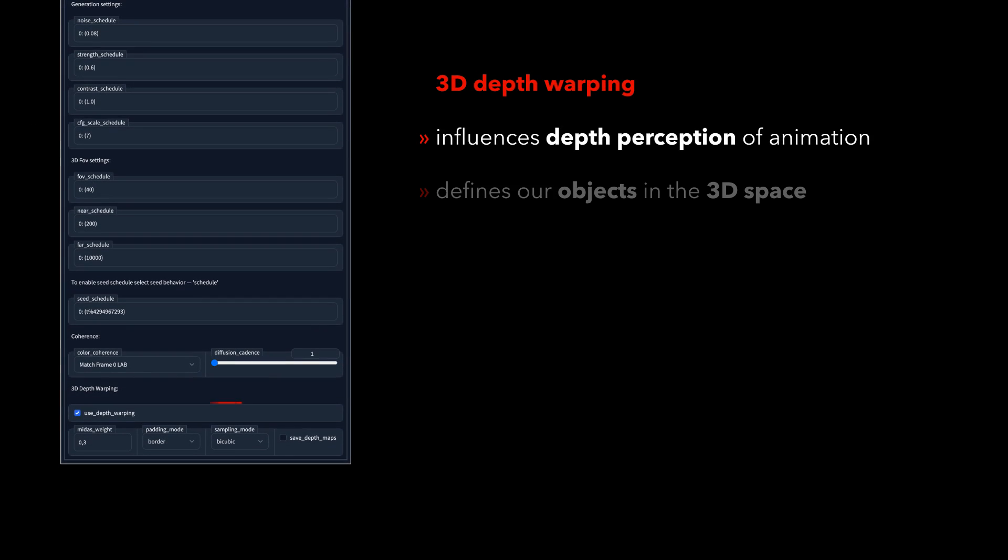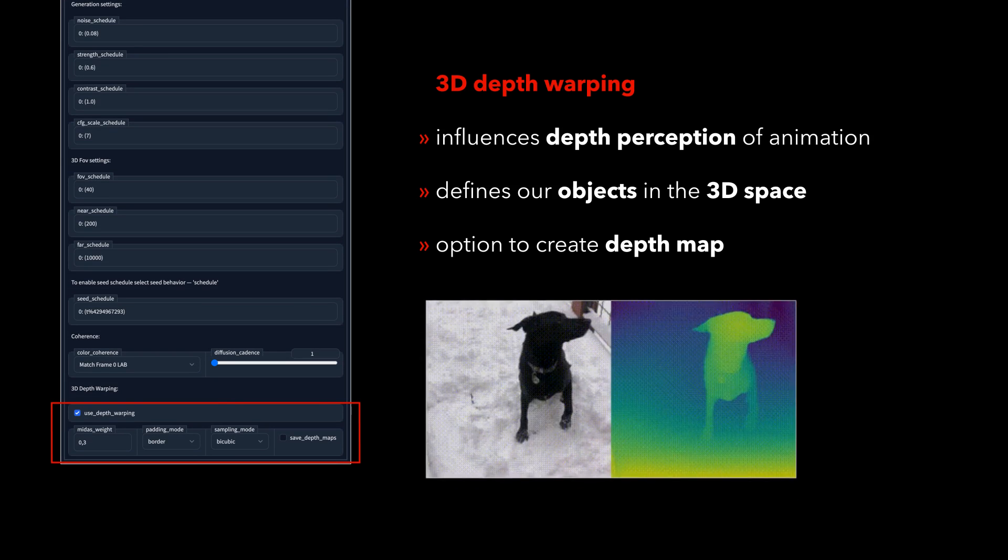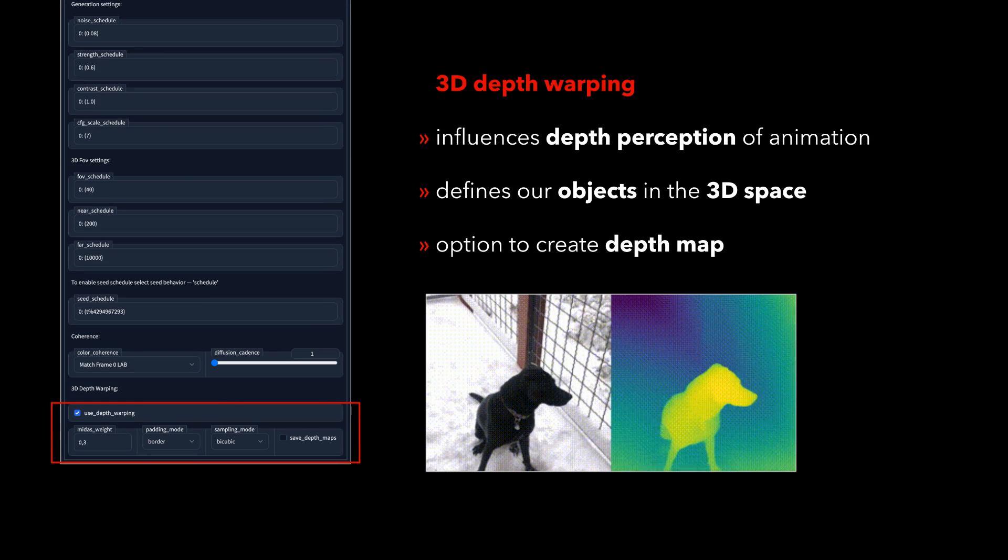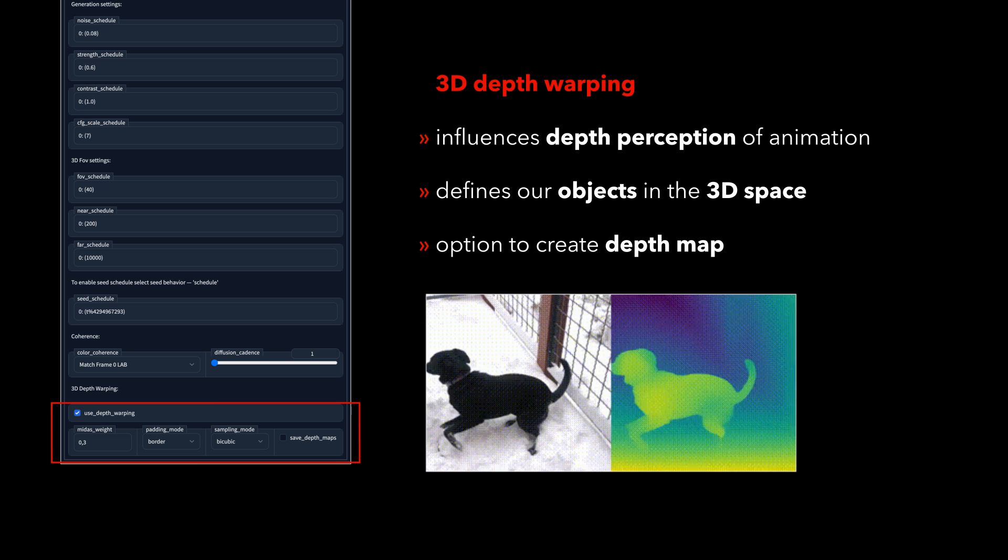Last but not least, on the very bottom, we can find the 3D depth warping settings, that give us the possibility to influence the depth perception of our animation. This will define how stable diffusion interprets and displays our objects in the 3D space, and can be visualized by creating a depth map.